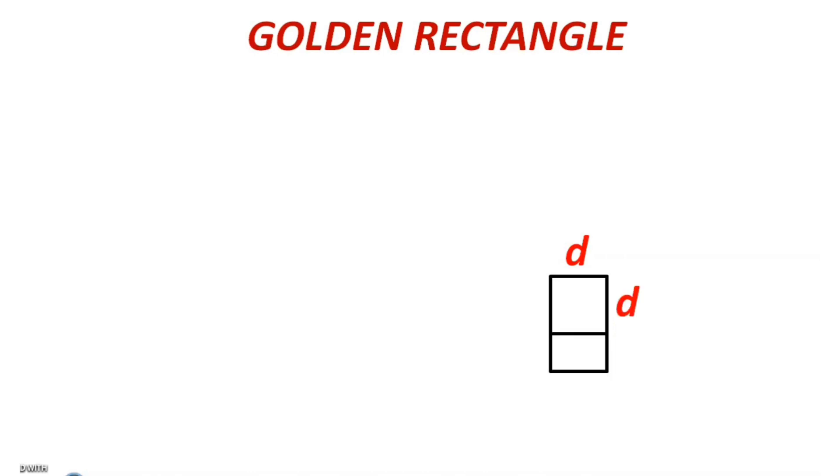Not only by removing the squares like this, we can also construct golden rectangles by adding squares to the rectangle. Whichever is the longer side of the rectangle, attach one square to that side. Again, this is the longer side, attach one more square. So like this you can go on constructing golden rectangles.